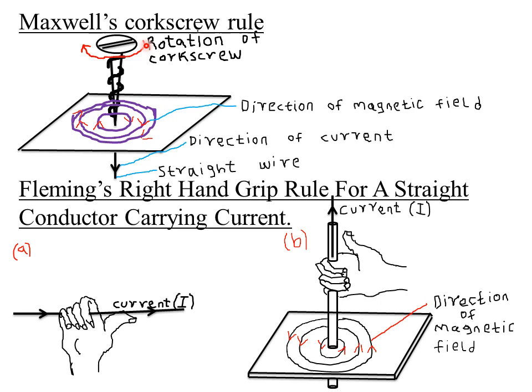The most important thing to note is that the direction of the forward rotation of the screw is also the direction of motion of the field lines. Maxwell's screw rule states that if a right-handed screw is driven forward in the direction of the conventional current, then the direction of rotation of the screw is the direction of the field lines.